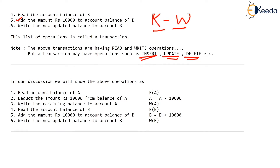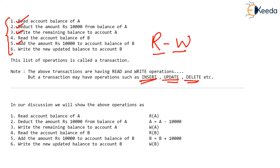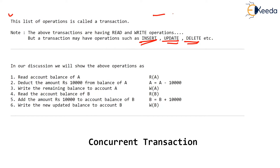I have written the same six steps of the transaction — transferring account money from A to B — here. What I want to point out is that this has been written in algorithmic fashion. The way most authors use notations to write this particular transaction is: for reading the account balance of A, we write it as R(A) — read A, in bracket A.